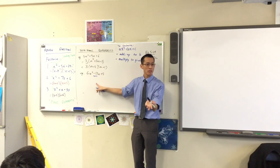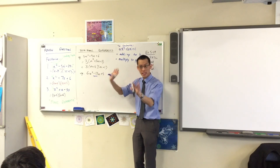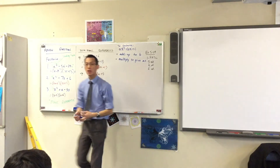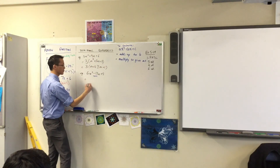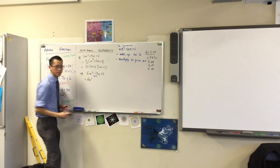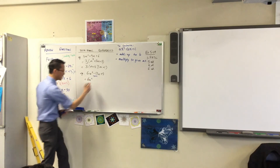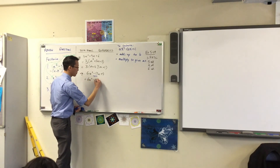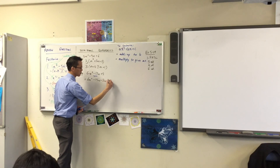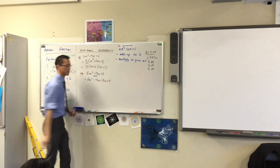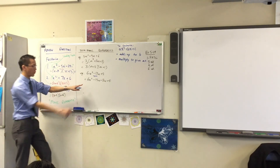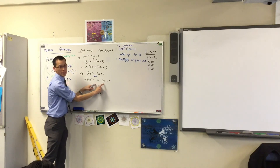That'll work — the negatives will give us what we need. So we write the next line: 6W squared, minus 15W, minus 2W, plus 5. This is how we decided to split it, and now we're about to find out if we split it correctly.